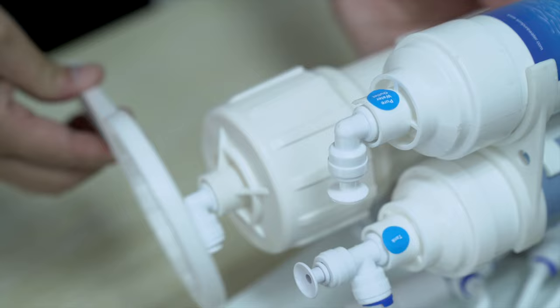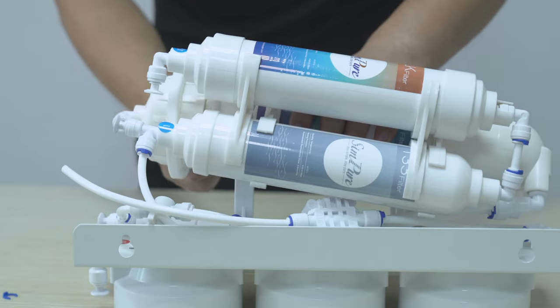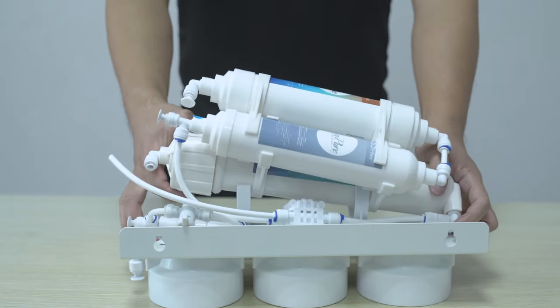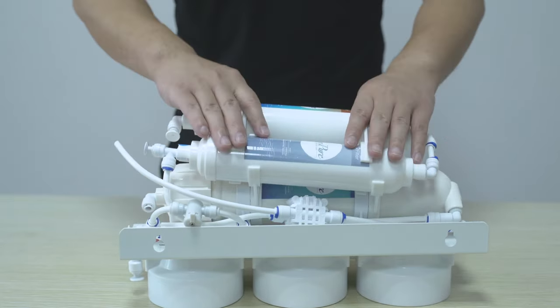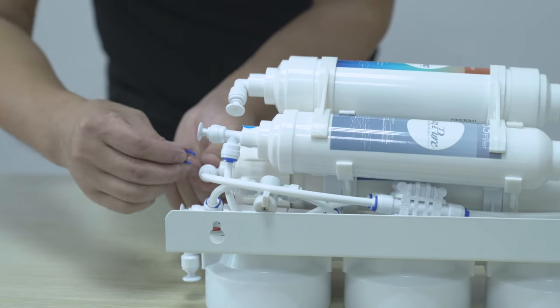Before reassembling, tighten the end cap using the RO housing wrench. Reconnect the PE tubing and secure with a blue tube clip to the RO housing cap.